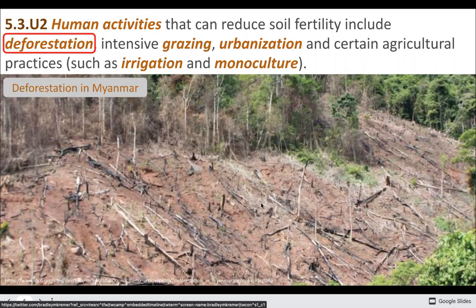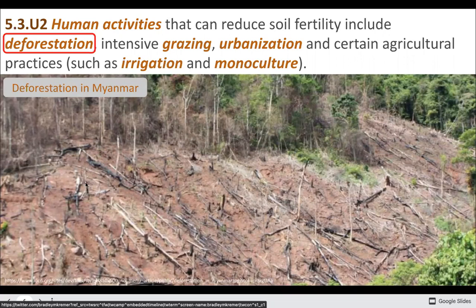We can cut down all the trees. Without roots, the soil is no longer held in place. The tree canopy also protects from rain, which helps reduce erosion. Trees increase infiltration, so more water goes into the soil. Without trees, water runs off more, the soil compacts, and runoff gets even worse.